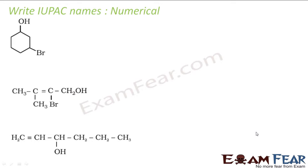Let me show you a few more examples. OH is the primary group. I should number from this side: 1, 2, 3 to get 1,3 instead of 1,5. At position 3, I have bromo, and this is a cyclic structure with 6 carbons. So the name is 3-bromocyclohexan-1-ol.